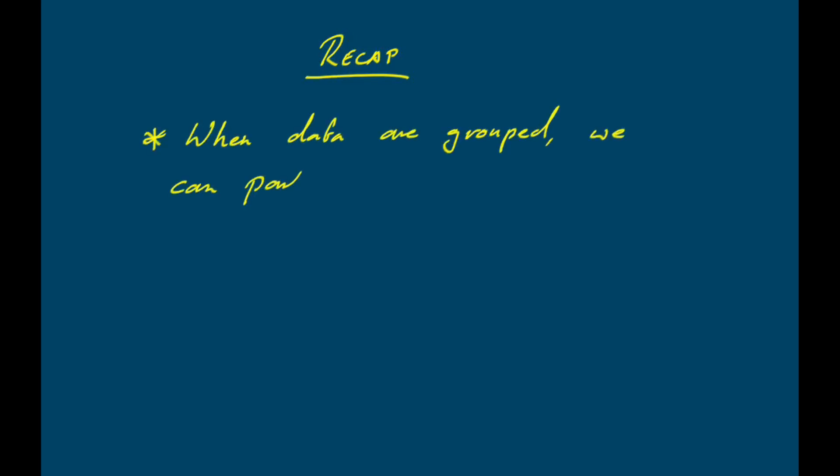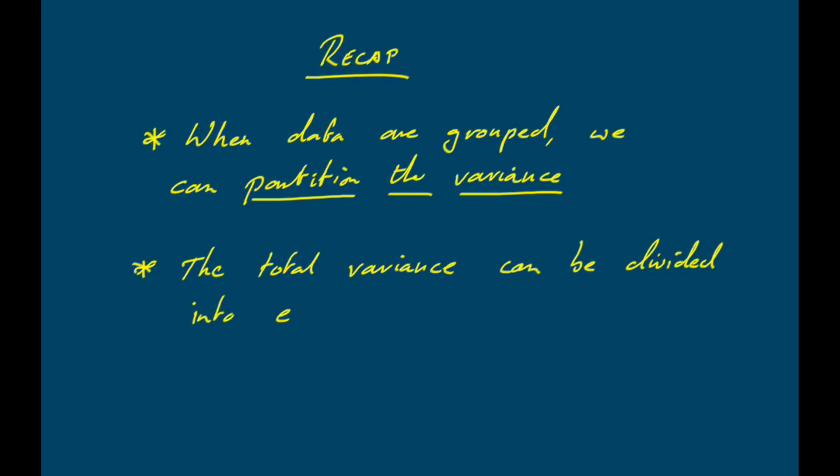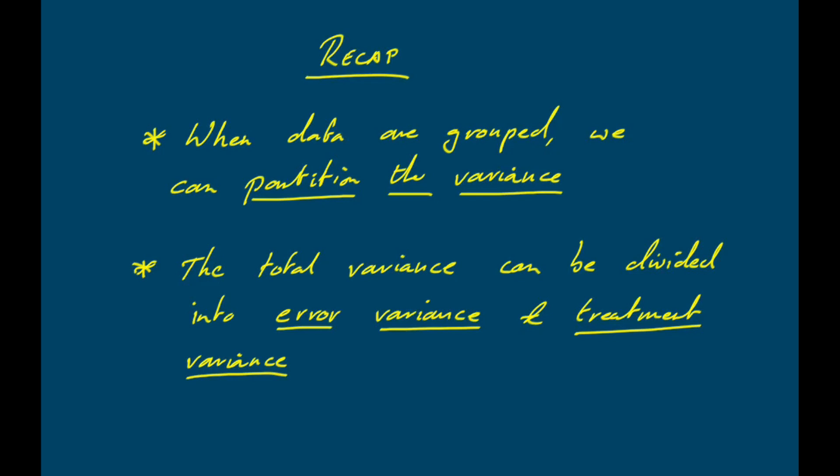Just a quick recap. When we have groups in our data, we can partition the variance into the variance that's explained by the structure in the data and the variance that isn't. The total variance can be divided into the variance explained by the differences between the means of our groups — called the treatment variance or factor variance — and the variance we're unable to explain, called the error variance or residual variance.